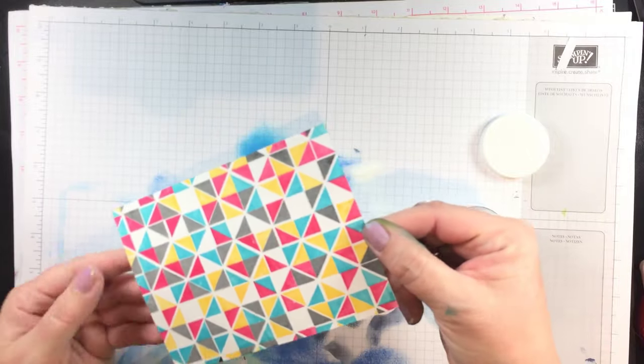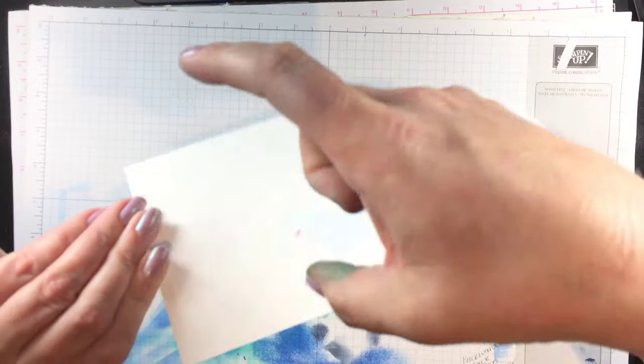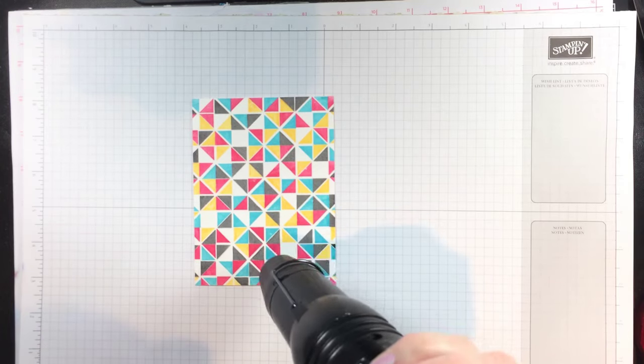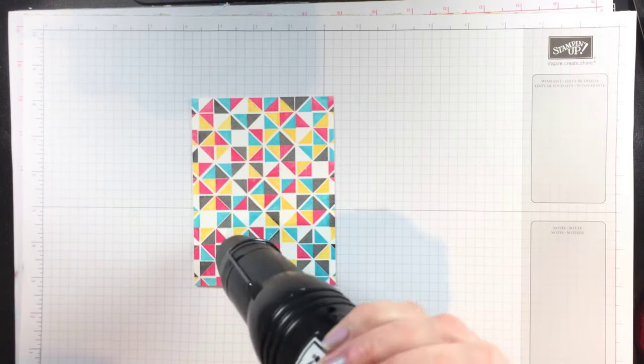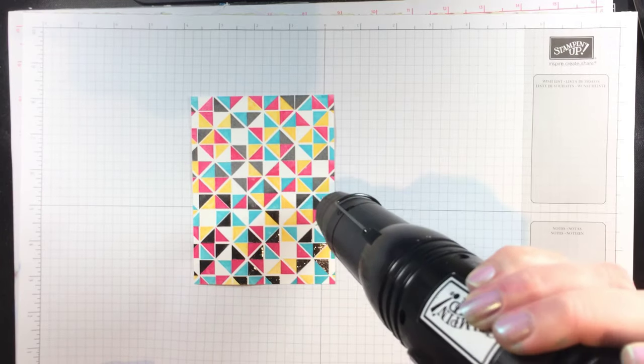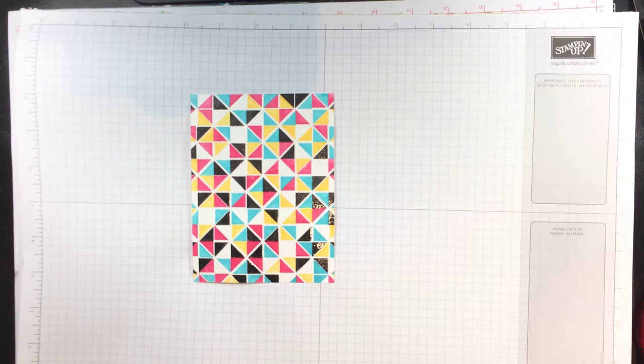I always give it a good thump to get the excess off. Speed up the heat setting. Embossing is still the most magical process in all the stamping land. Look how shiny and perfect that is. Such a fun punchy image. I just love it.